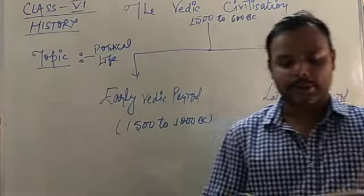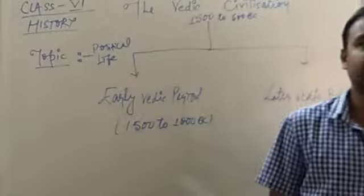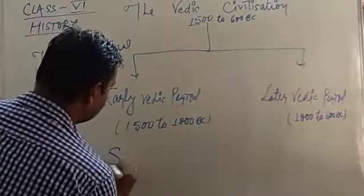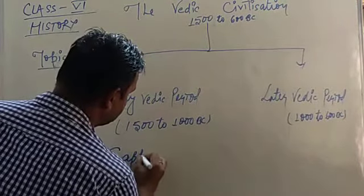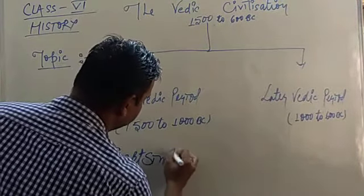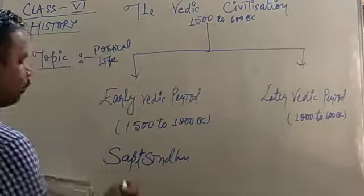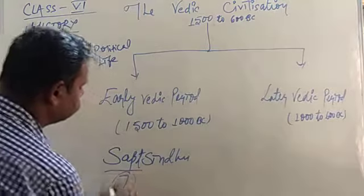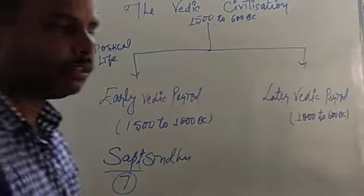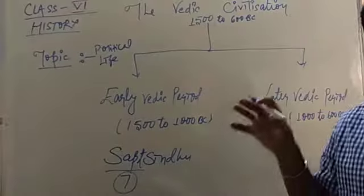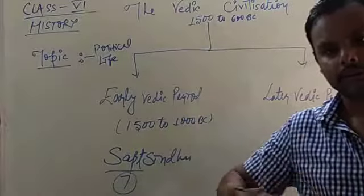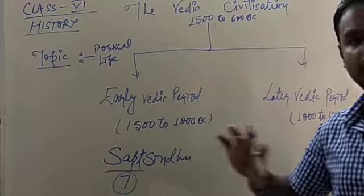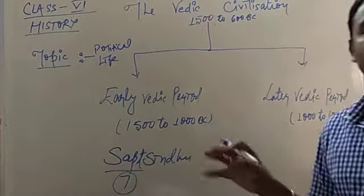The early Vedic people lived in the region called Sapt Sindhu. Sapt means seven, it is a Sanskrit word which means seven. So basically where they lived, seven rivers flowed over there. That is why that place is known as Sapt Sindhu.